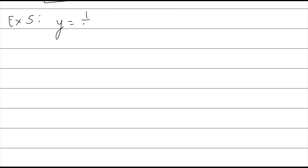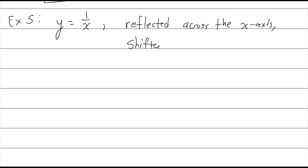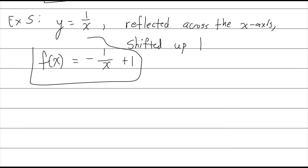Last example: write an equation for a function with the shape of y equals 1 over x, but reflected across the x-axis and shifted up 1 unit. Reflected across the x-axis means a negative in front. Shifted up 1 means plus 1 on the end. So the function is y equals negative 1 over x plus 1. And that is transformation of functions.